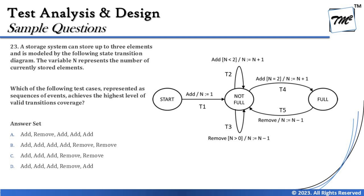Looking at test option A: add, remove, add, add, add — that can be written as t1, t3, t3, t2, t4. It covers four out of five transitions because it doesn't hit t5, which is the remove-from-full transition. Three consecutive adds make the container full, giving 80% coverage.